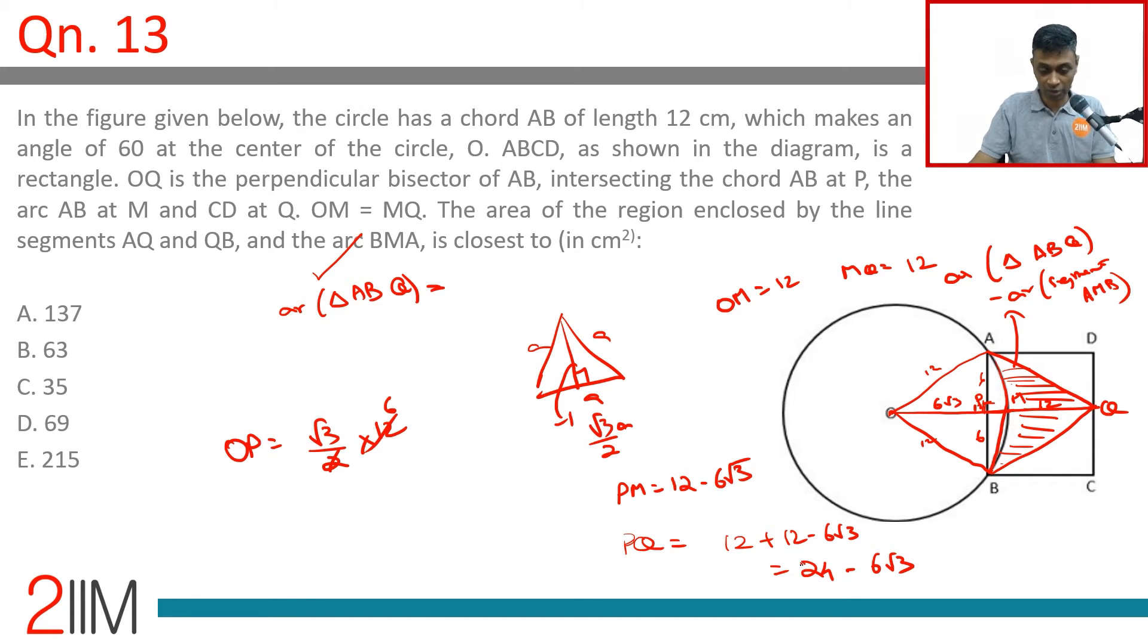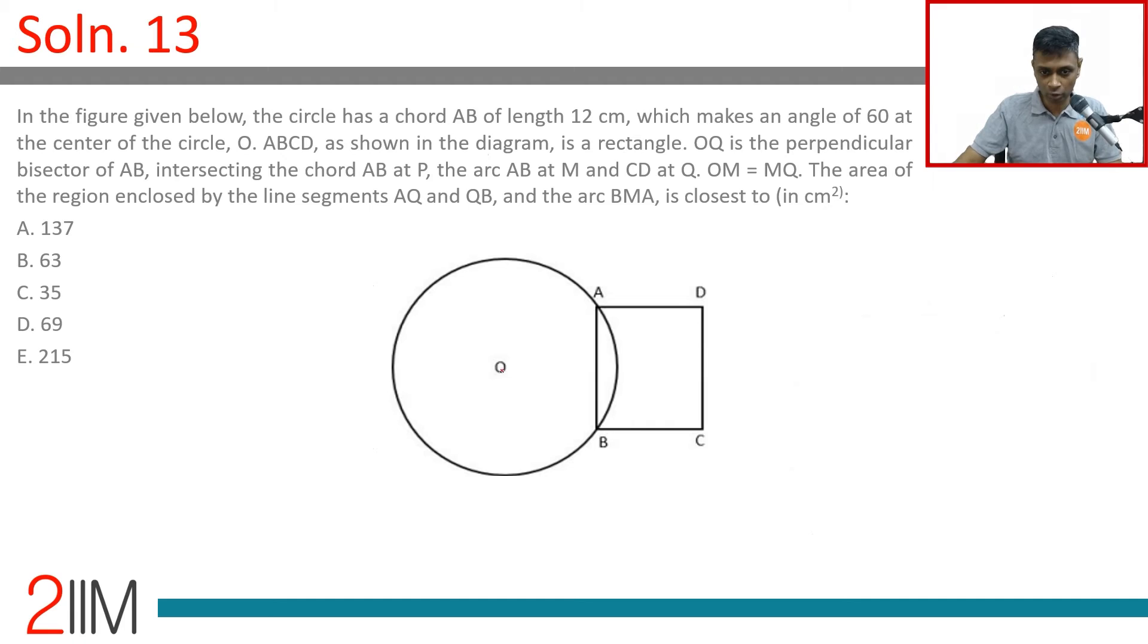Now that's not enough. You still need to worry about segment AMB. Let's redraw this diagram here to recap everything. OP is 6 root 3, PM is 12 minus 6 root 3, MQ is 12, PQ equals 24 minus 6 root 3. With this set of information we can find area of triangle ABQ. That part is covered. Now we're looking to find this.